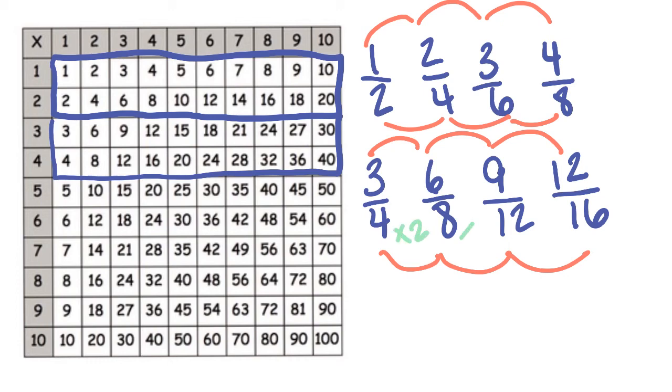Because if you multiply eight times two, eight times two is 16, and this is times two. What happens is it'll give you this next equivalent fraction, skipping over the nine twelfths.